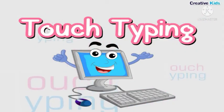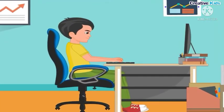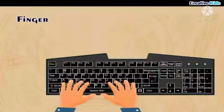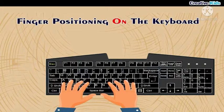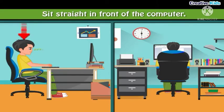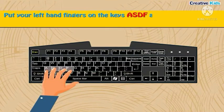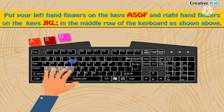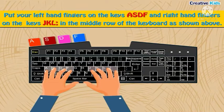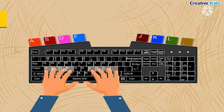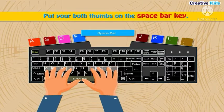Touch typing. Touch typing is a method to type text on the computer without looking at the keyboard. Finger positioning on the keyboard: sit straight in front of the computer. Put your left hand fingers on the keys A, S, D, F and right hand fingers on the keys J, K, L, semicolon in the middle row of the keyboard. Put both thumbs on the space bar key.